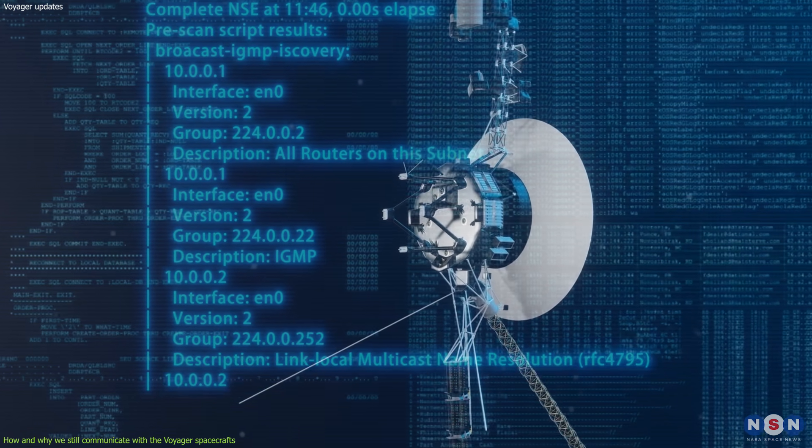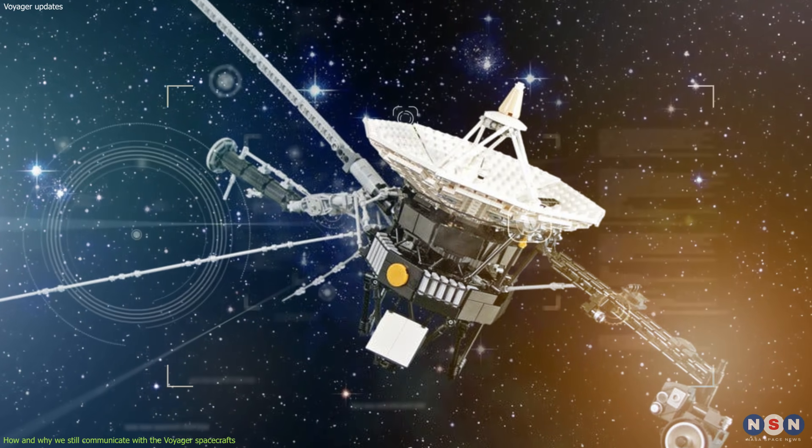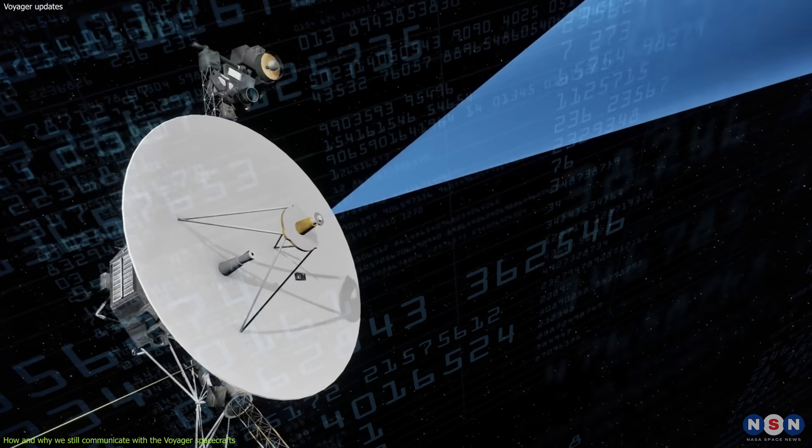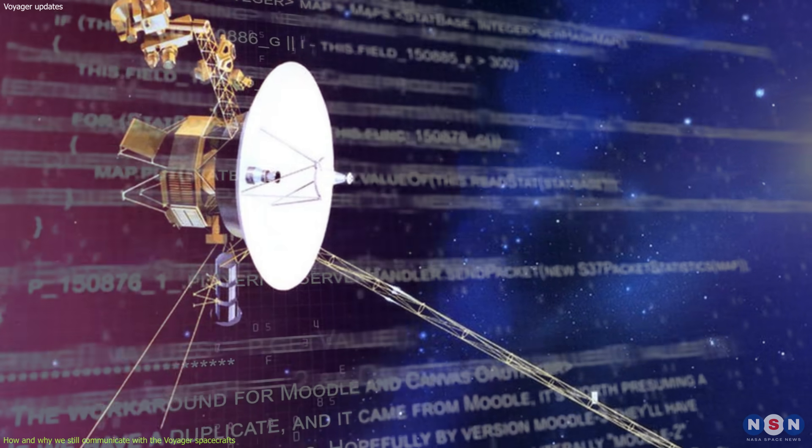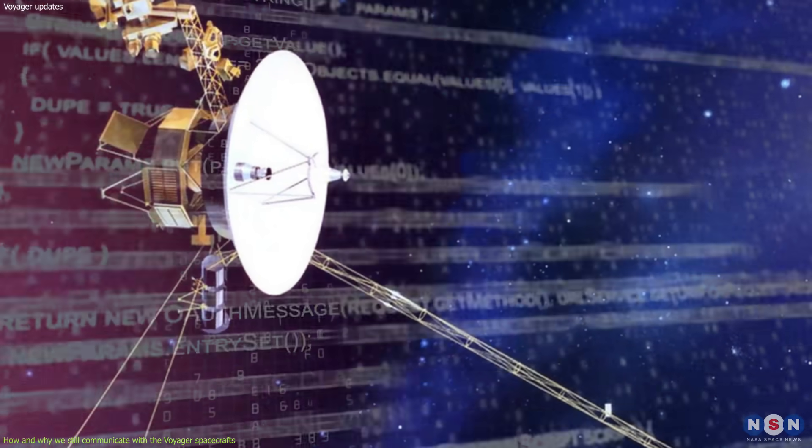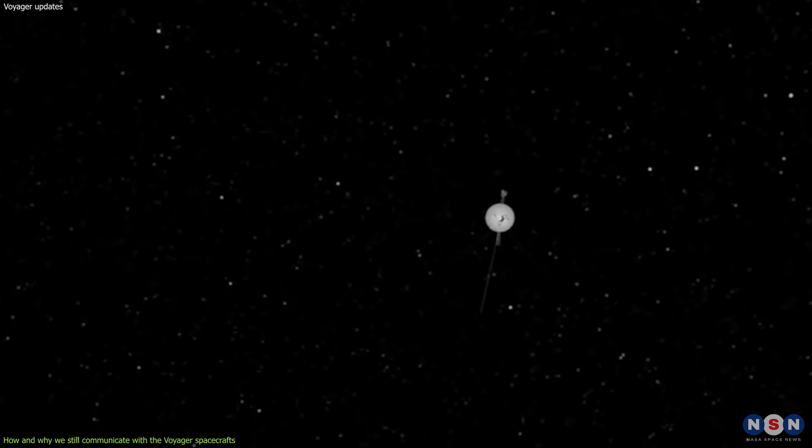We send them commands to control their instruments, adjust their power levels, and update their software. We receive data from them about their status, their environment, and their discoveries. For example, we recently updated the software on Voyager 2 to optimize its memory usage and extend its lifespan.